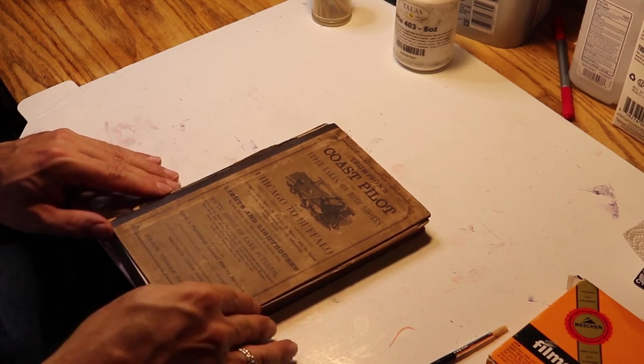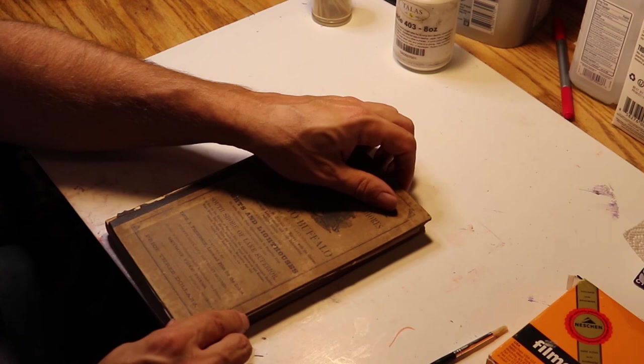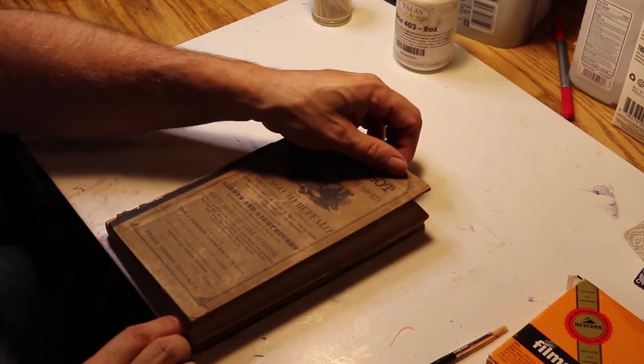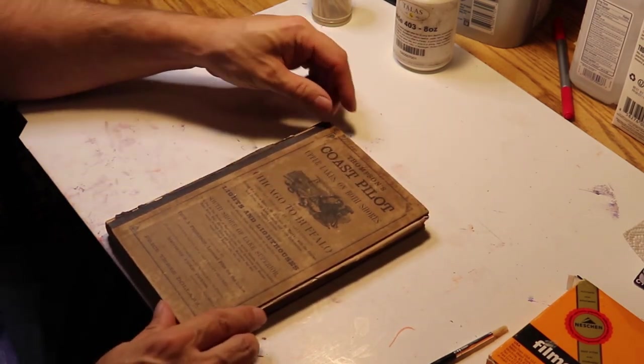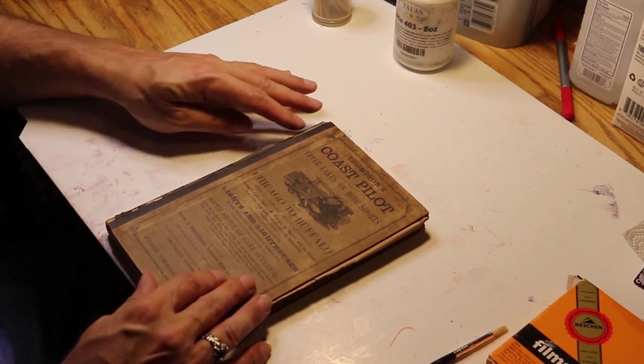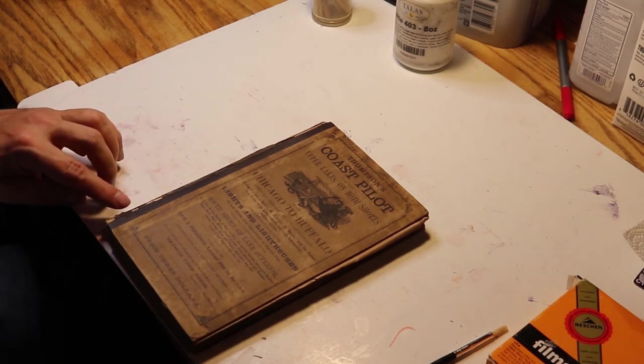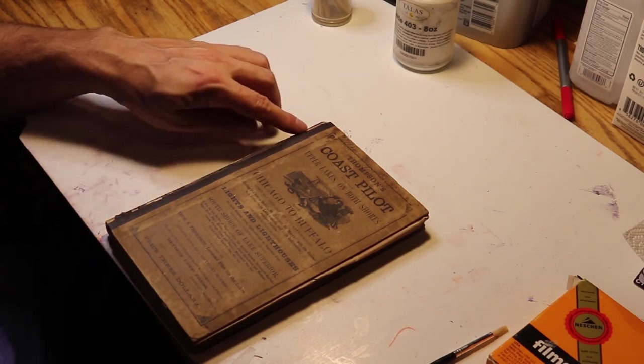And then what I'll do, after I get that feathered in, this isn't lining up very well. Obviously, if I was really gluing this, I would be doing it one piece at a time. So you can see that lines up pretty well, actually. I'm also going to apply glue on the outside here, right underneath here. Now, that's going to show, you're going to see this shiny PVA glue through here.